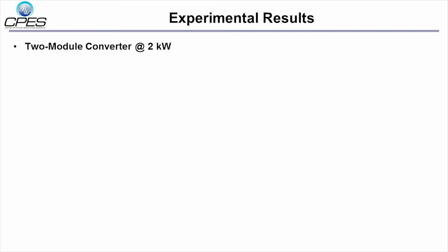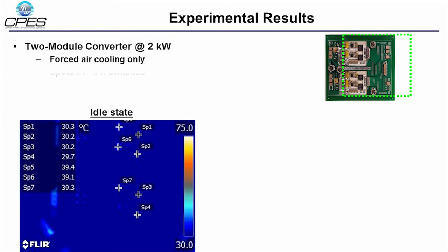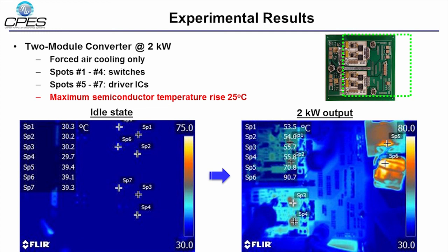Now the experimental results with the proposed switch modules are shown. We still cool down the semiconductors with forced air cooling and do not use any liquid coolants. The thermal image shows the temperature of the gallium nitride switches and their drivers. In the idle state, the temperature of the switches spot number one to spot number four is around 30 degrees C, and that of the drivers spot five to seven is 40 degrees C approximately.